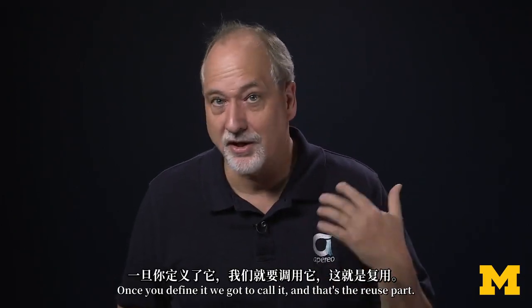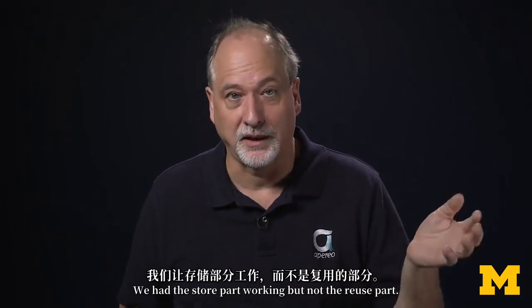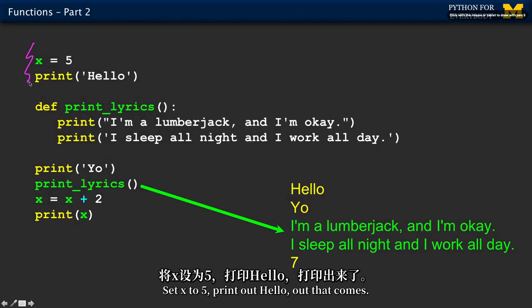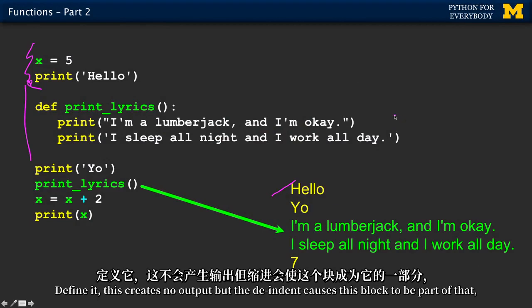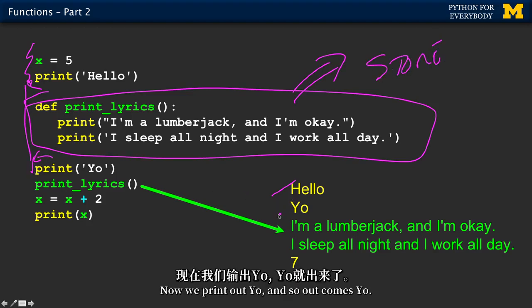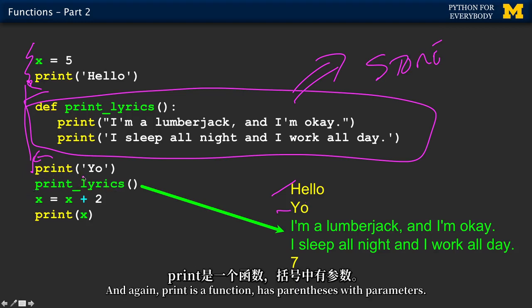Once you define it, we've got to call it, and that's the reuse part. We had the store part working, but not the reuse part. So here we go. So this is a little more of a functional bit of code. Set x to 5. Print out hello. Out that comes. Define it. This creates no output, but the dedent causes this block to be part of that, and that's sort of been stored. Store.